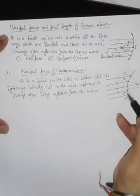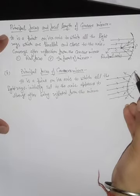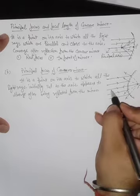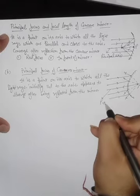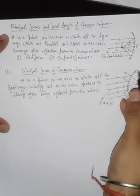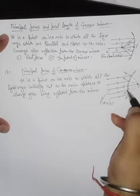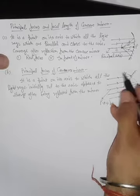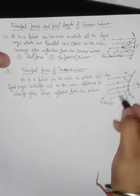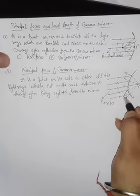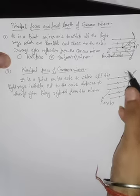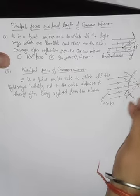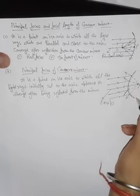In a convex mirror, the hollow part faces inward. Light rays come from infinity along the principal axis. After striking the surface, they move outward in this direction — you can see the light rays going in this direction after striking the inward side of the mirror.